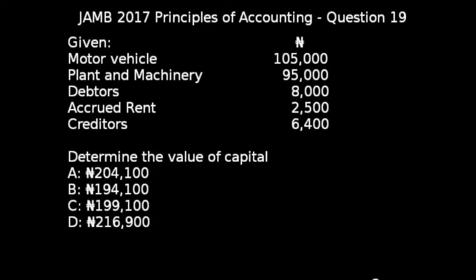JAM 2017 Principle of Accounting, question 19. The question says: determine the value of capital. Items are given to us — motor vehicle 105,000, lands and machinery 95,000, debtors 8,000, accrued rent 2,500, and creditors 6,400.